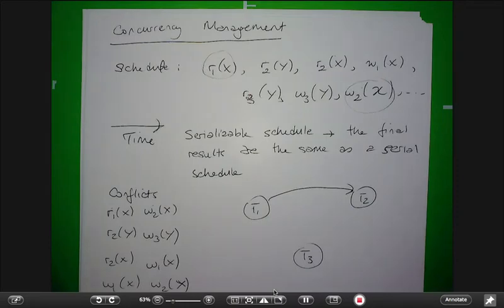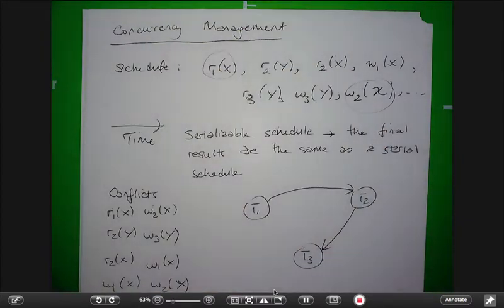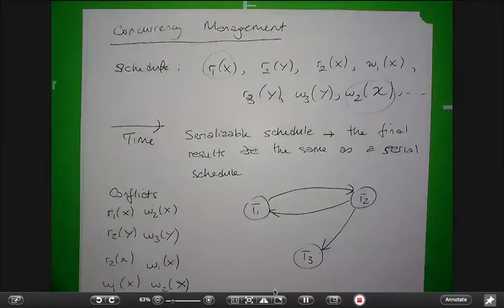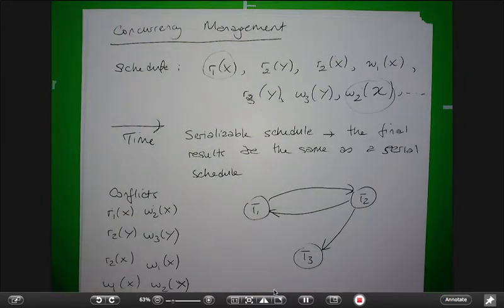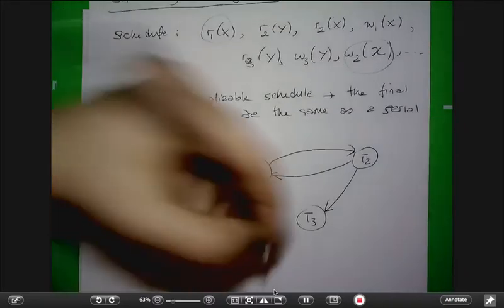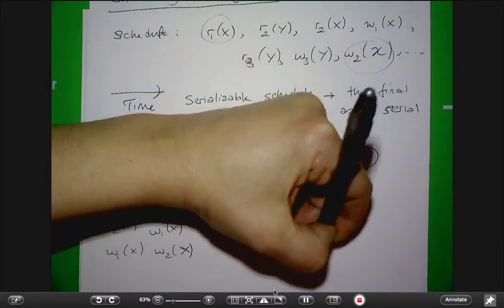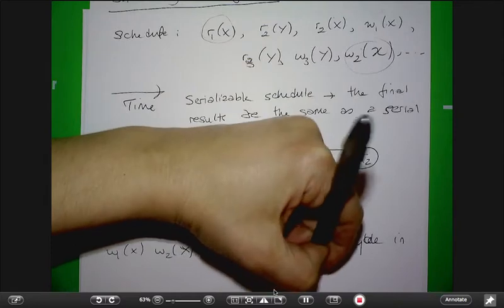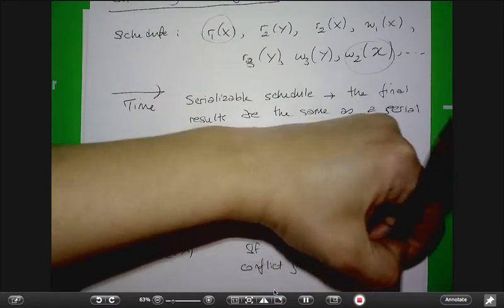This tells us that in any serial schedule, T1 must come before T2. This one has 2 coming before 3, so in any serial schedule, 2 must come before 3. But read-2 of X and write-1 of X is telling us that T2 must come before T1 — this is not possible. You cannot have 1 come before 2 and 2 come before 1. As a result, this is not serializable because there is a cycle in the conflict graph. If there is a cycle in the conflict graph, the schedule is not serializable.